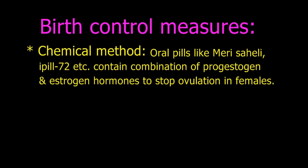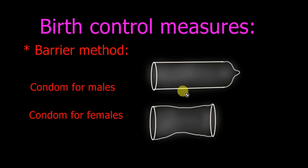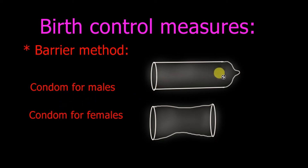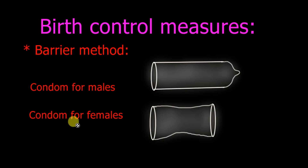The second method is the barrier method, where a physical barrier is created between male and female. Condoms are used for both males and females. Male condoms are used as a covering over the penis so that when semen is discharged, it remains within the condom and does not enter the female tract.